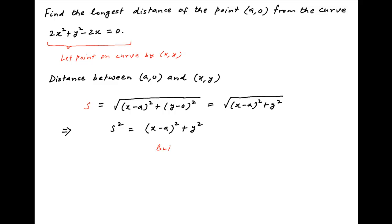From the equation of the curve, y squared is equal to 2x minus 2x squared. Substituting this value of y squared, s squared is equal to (x minus a) squared plus 2x minus 2x squared. Let's denote s squared by t.